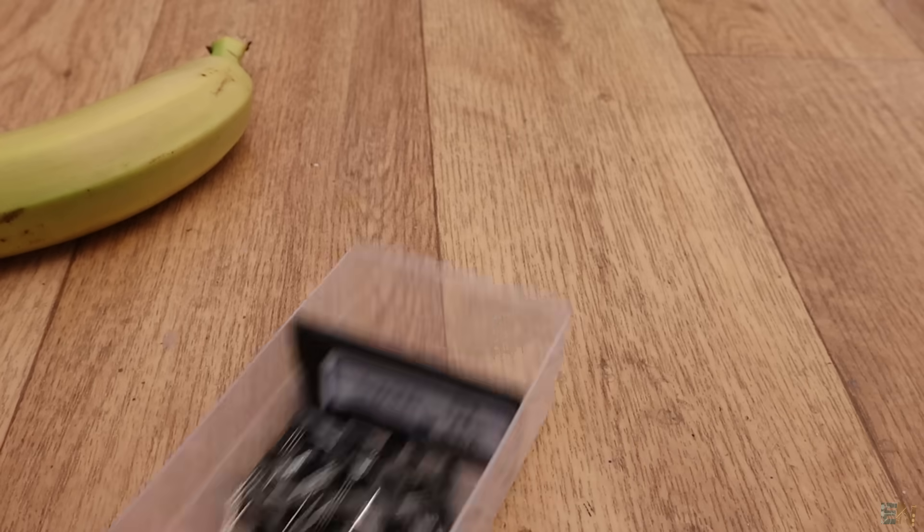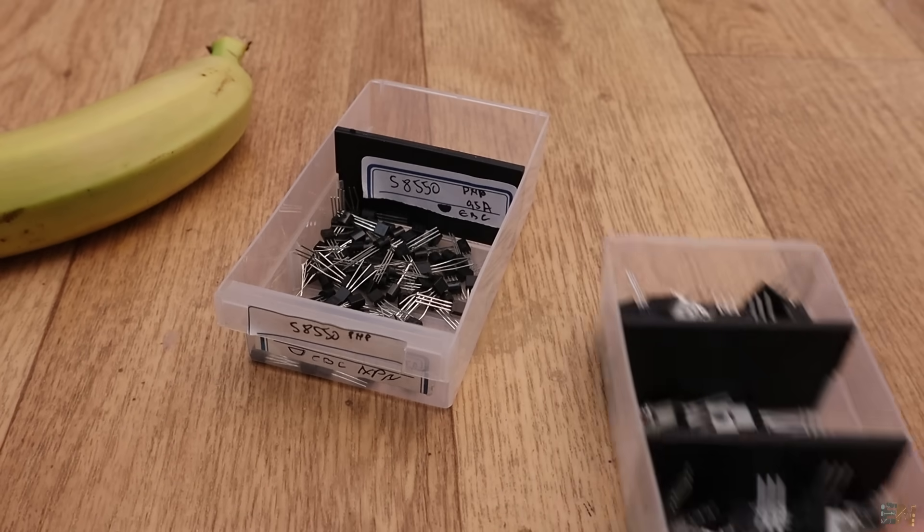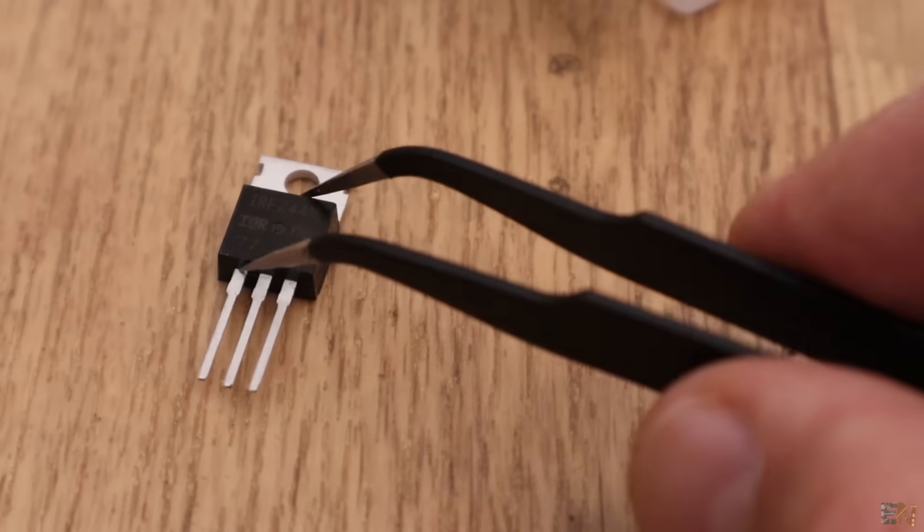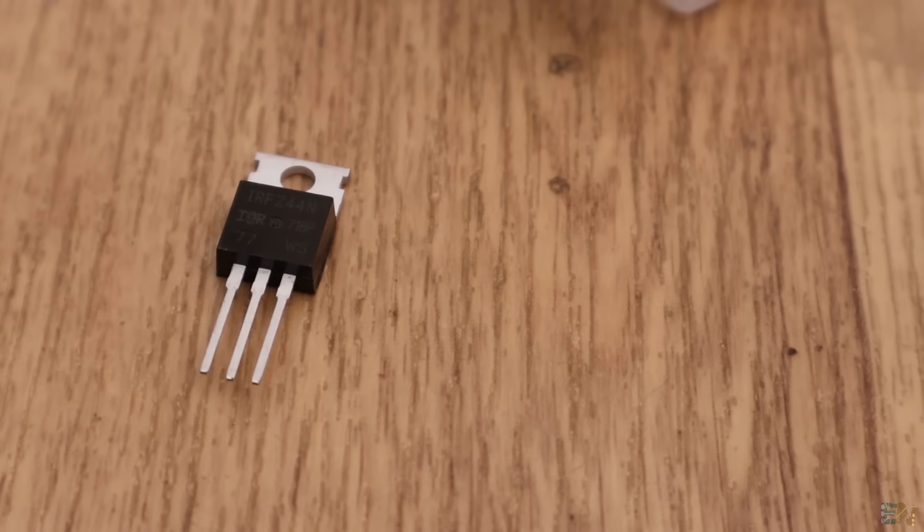What's up my friends, welcome back. For this video we have three types of transistors. First we have the MOSFET, then the BJT and the IGBT.